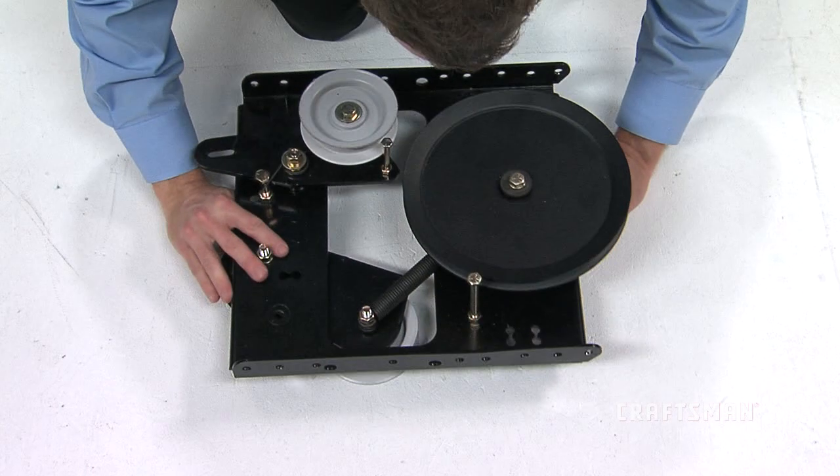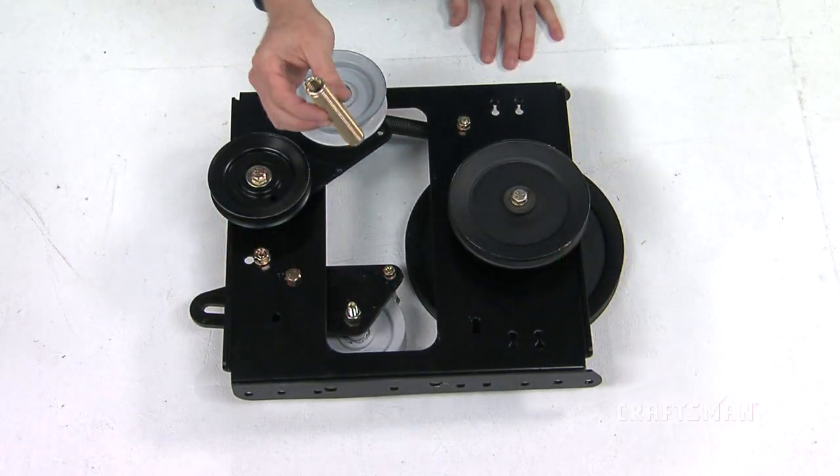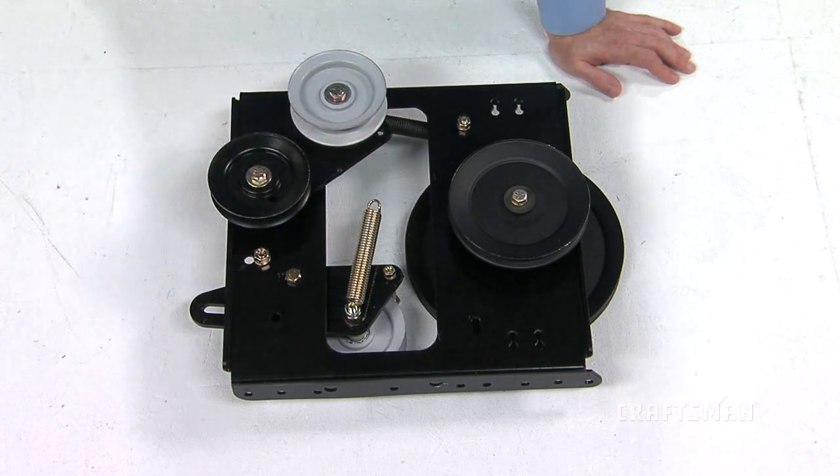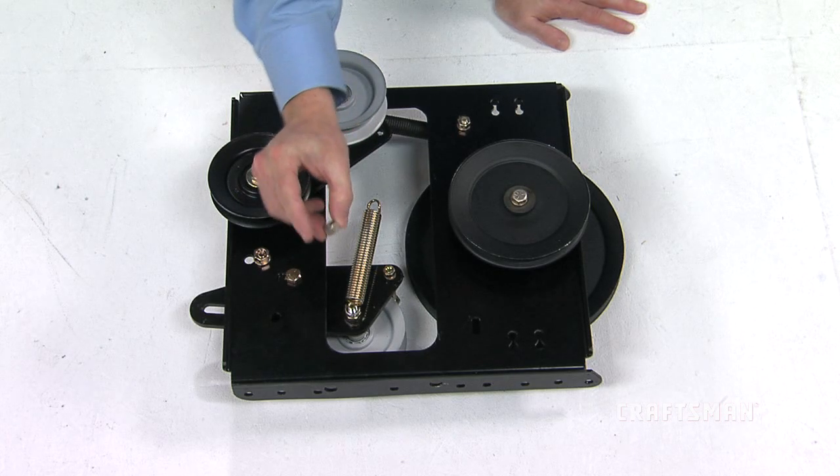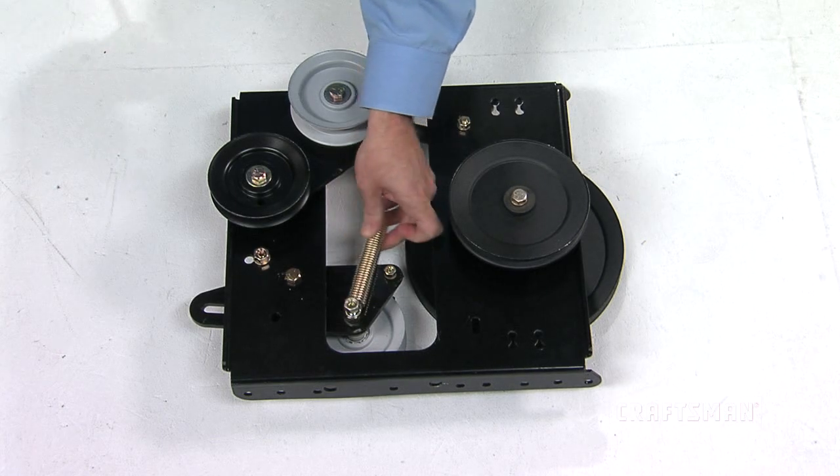First, turn the clutch idler assembly upside down. Next, hook the spring onto the end of the bolt that extends through the nut on the bottom of the upper idler arm. Install a 3-8-inch hex lock nut, part GG, onto the bolt, leaving enough space for the spring to pivot.